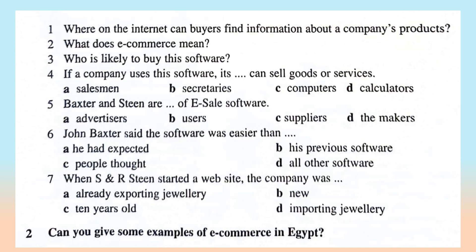Now we are going to answer the following questions related to what we have read. Where on the internet can buyers find information about a company's products? They can find it in a catalogue. What does e-commerce mean? It means buying and selling using the internet. Who is likely to buy this software? Any company, whether large or small.